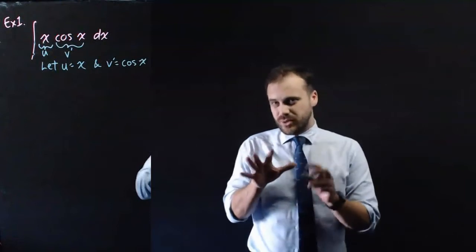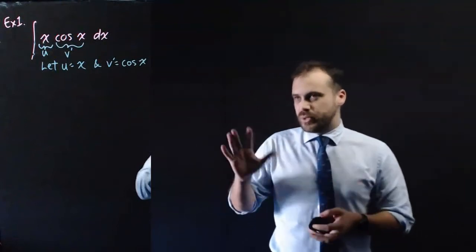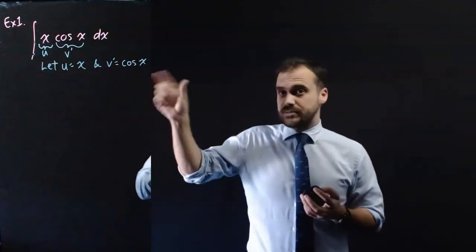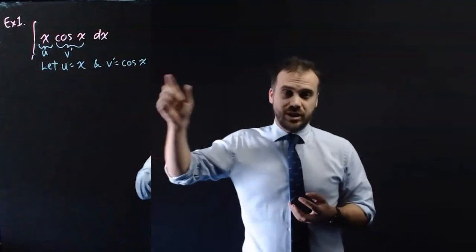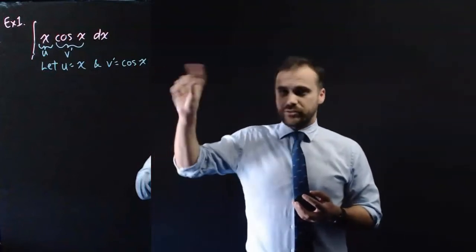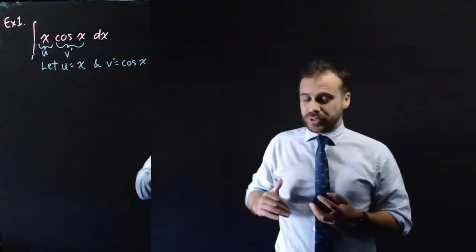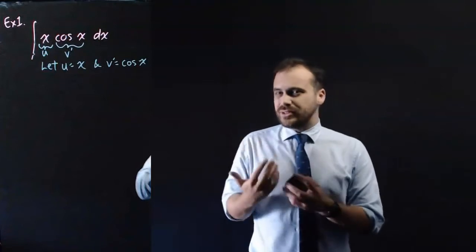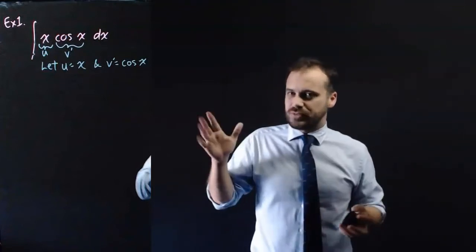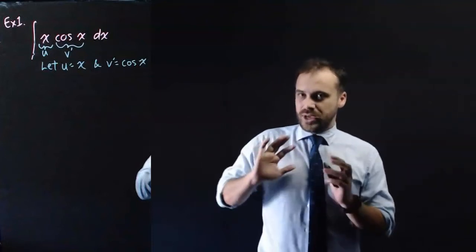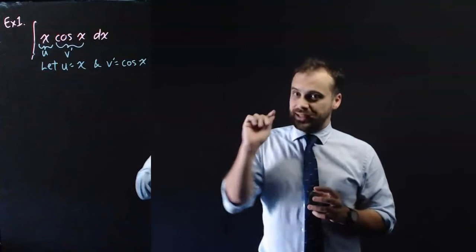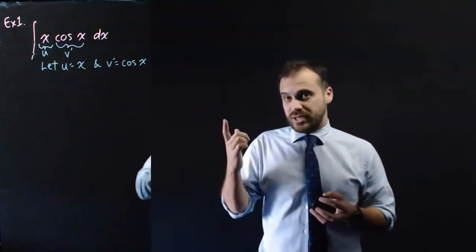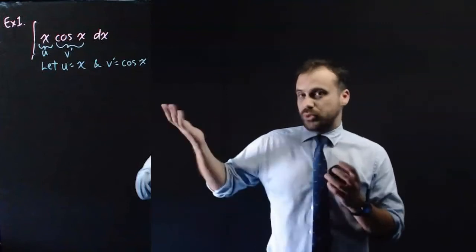A question that I think everyone's going to have: which one should I make u and which one should I make v'? This formula isn't symmetrical, so it really does matter. If you make the wrong one u and the wrong one v', the formula gets really complicated and you can't solve it. It's a little complicated to explain right now until you've seen lots of integration by parts, so I'm going to do this whole video choosing u and v', and the next video will explain how I choose. For now, just trust me and watch which ones I choose.